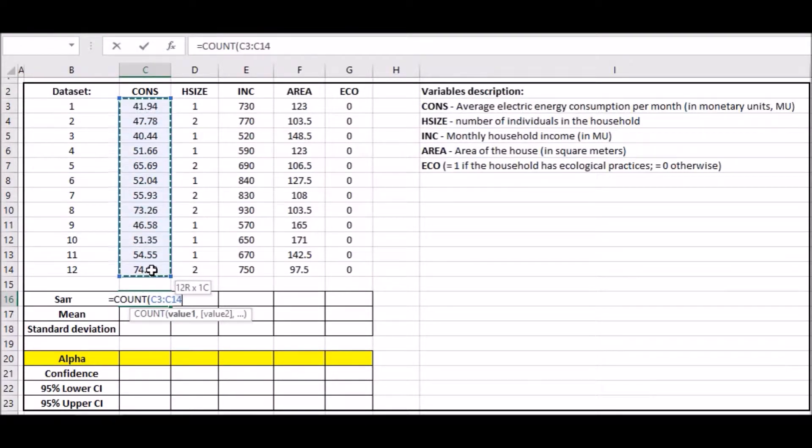Scroll down, highlight the 12 values, and press Enter. Then grab this corner and drag it across. This literally copies the formula across in every single cell.